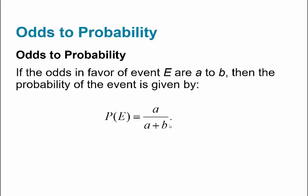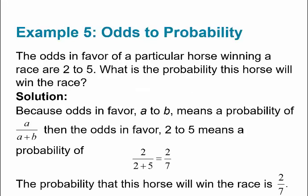Let's talk about converting odds to probability. If the odds in favor of event E are A to B, then the probability of the event is A divided by (A + B). For example, the odds in favor of a particular horse winning a race are 2 to 5. The probability the horse will win equals the first number over the sum of both numbers: 2 divided by (2 + 5), which is 2/7. So the probability the horse wins is 2/7.